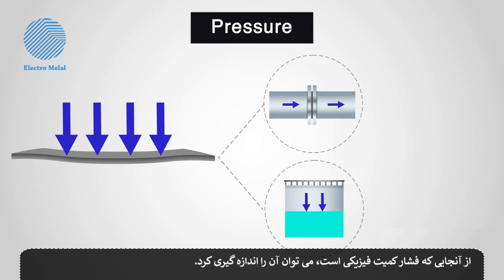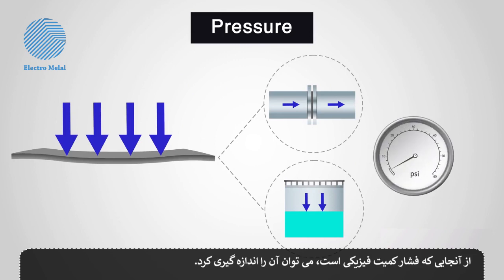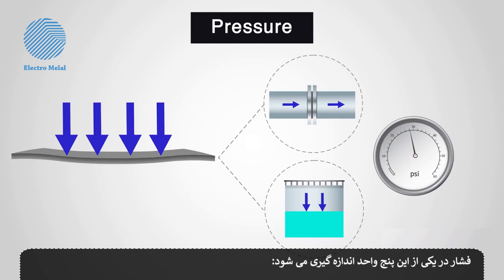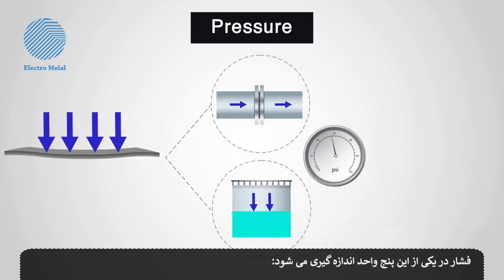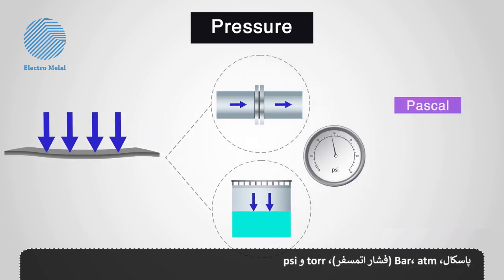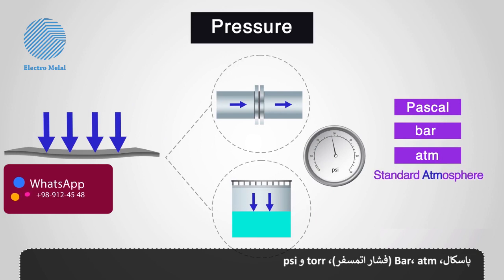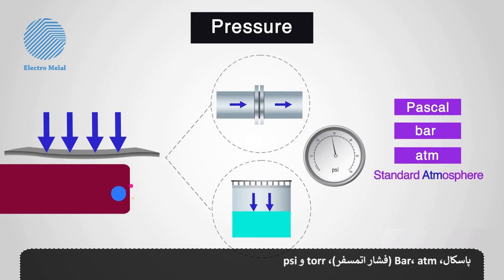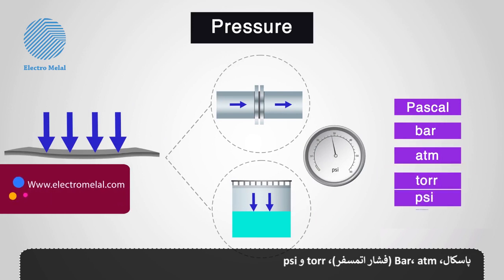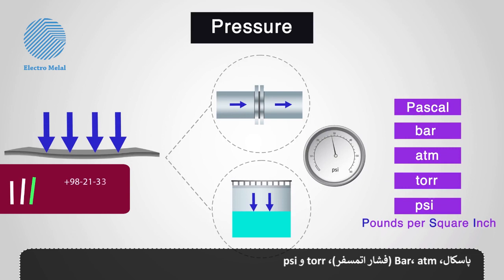Since pressure is a physical quantity, it can be measured. Pressure is measured in one of the following five units: Pascal, bar, standard atmosphere (or ATM), Torr, and pounds per square inch (or PSI).